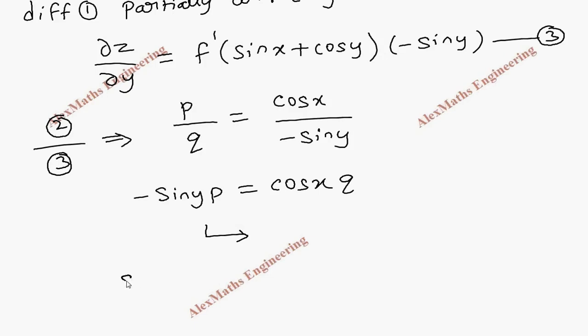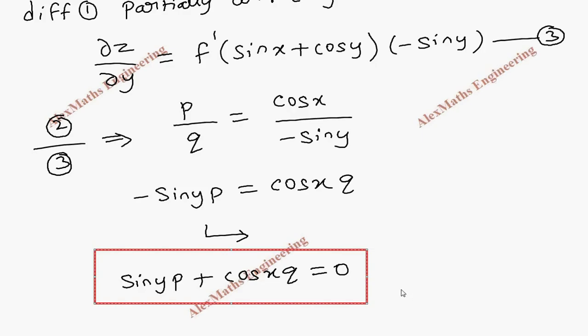we have sin y · p + cos x · q = 0. So this is our required partial differential equation after eliminating the given arbitrary function.